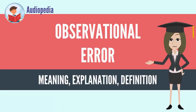Observational error or measurement error is the difference between a measured value of a quantity and its true value. In statistics, an error is not a mistake. Variability is an inherent part of the results of measurements and of the measurement process.